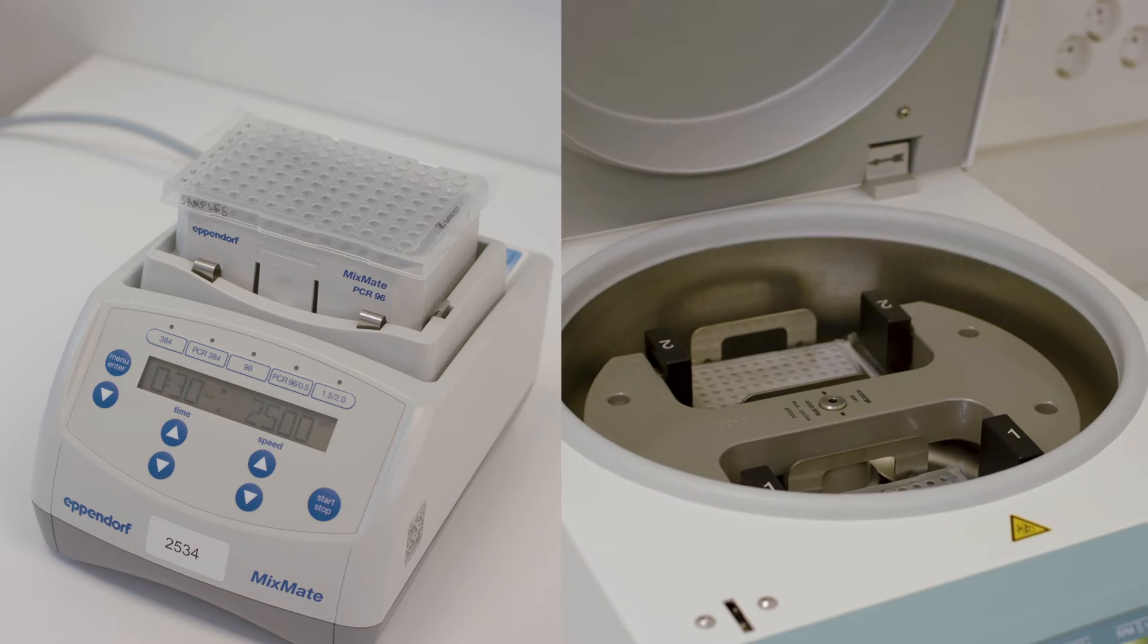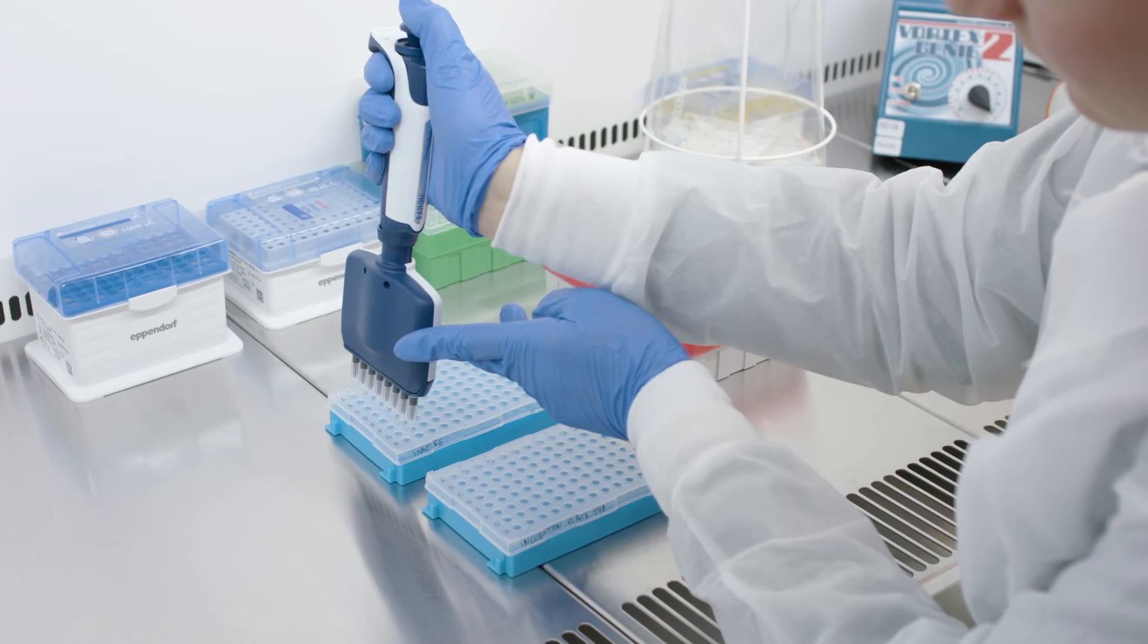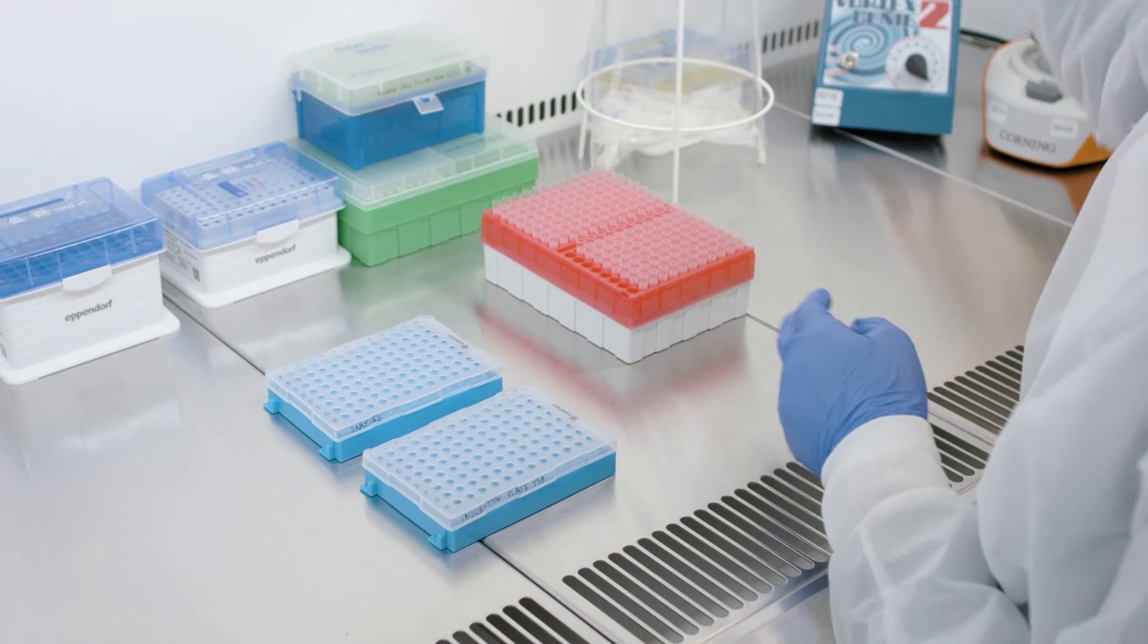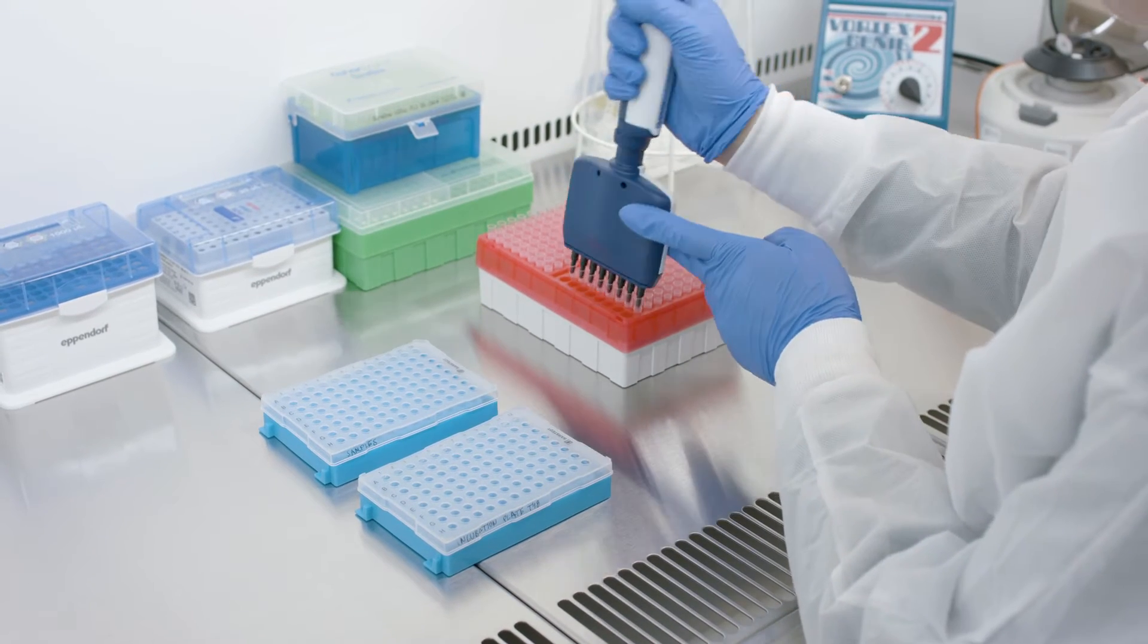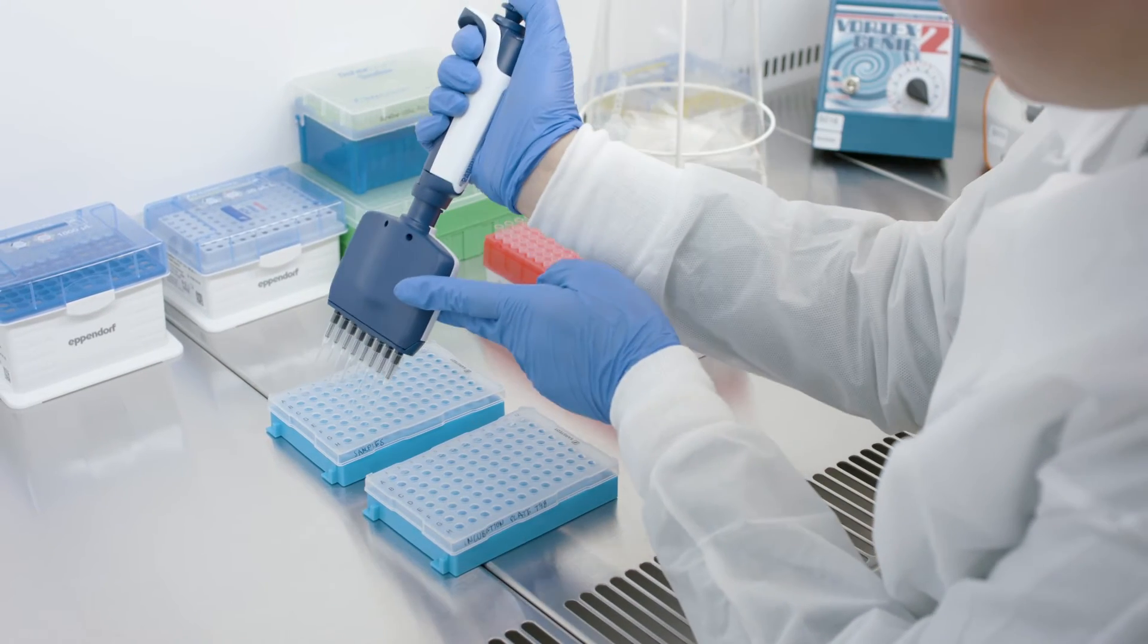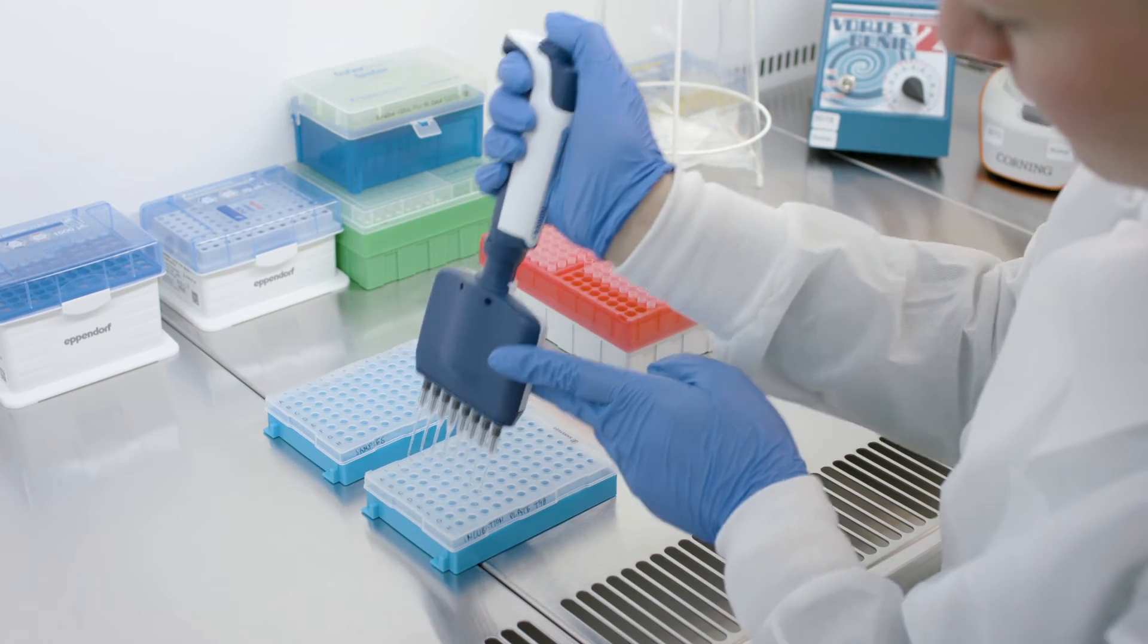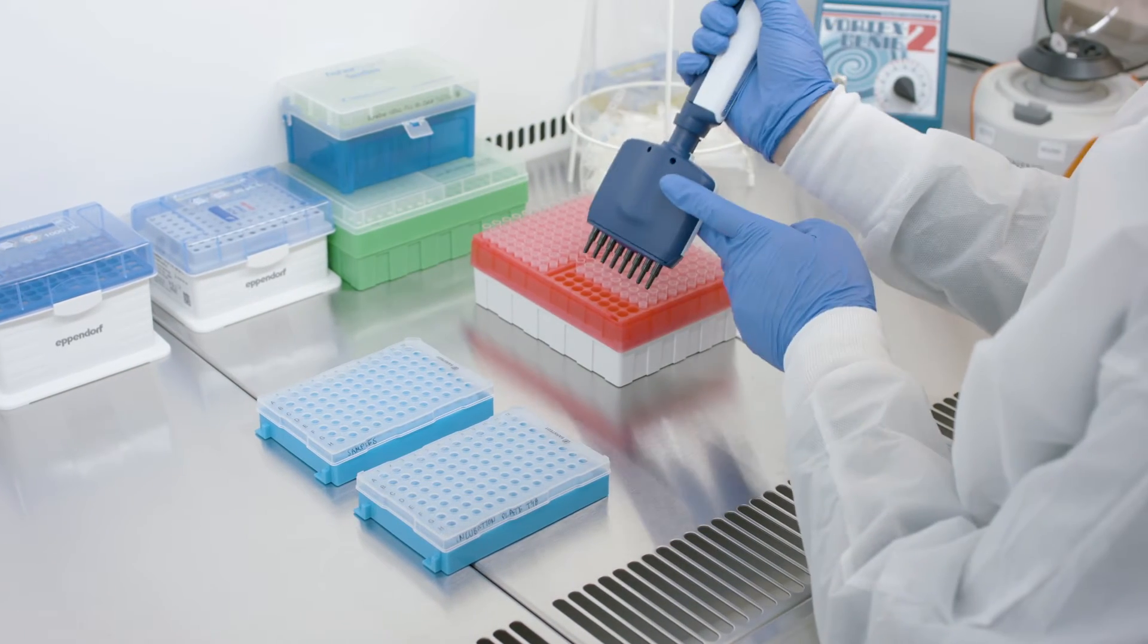Vortex the samples and spin them down. Transfer one microliter of each sample to the bottom of each well of columns one to five of the incubation plate, according to your sample plate layout, using a multi-channel pipette and forward pipetting. Make sure to change tips between the columns.